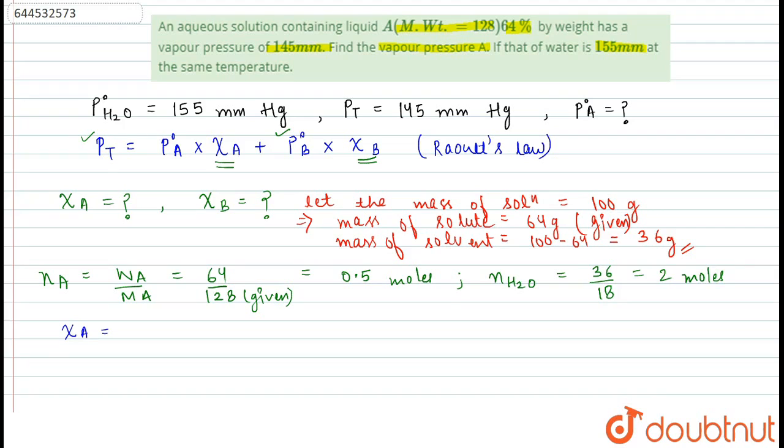Now, we can calculate the mole fraction of A in the composition that is 0.5 by 0.5 plus 2 comes out to be 0.2. For chi B, we can calculate by 1 minus chi A. The mole fraction is 0.8.